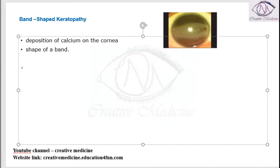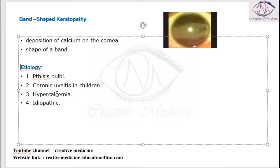Looking at the etiology of band-shaped keratopathy, it occurs due to phthisis bulbi, chronic uveitis in children, hypercalcemia, and idiopathic causes.